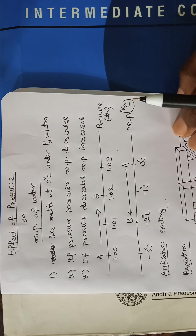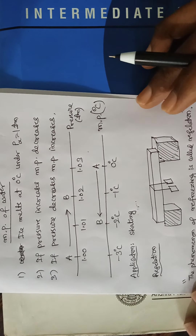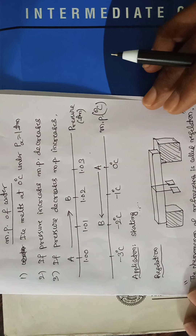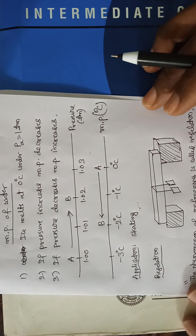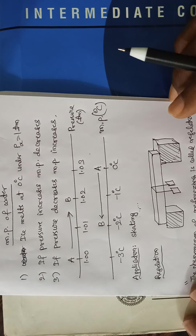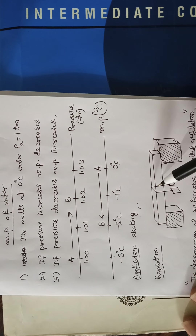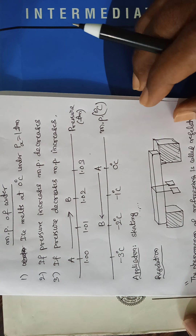Now let us consider a phenomenon called regelation. In the diagram, you can see an ice block placed on two wooden blocks, and over that, a metal wire is passing over the surface of the ice block. To its both ends, some weights are attached, which exert pressure on the ice block where the wire touches it.